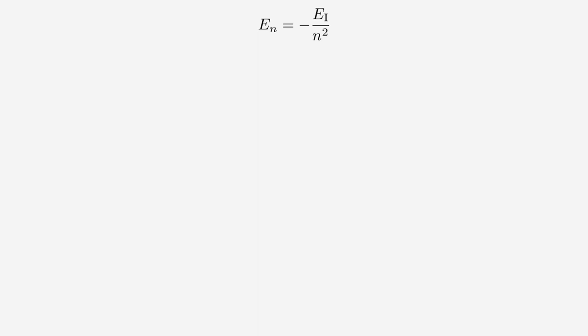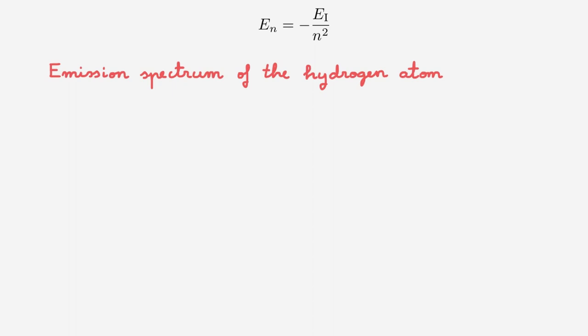Starting from these energy eigenvalues, the aim of today's video is to explore the emission spectrum of the hydrogen atom. When an atom transitions from a high energy eigenstate to a lower energy eigenstate, a photon is emitted whose energy is equal to the energy difference between the two states. The collection of all possible emitted photons is called the emission spectrum of the atom, and the study of these emitted photons is the subject of spectroscopy, which provides key information about the atomic energy levels. This emission spectrum played a key role in the development of quantum theory.